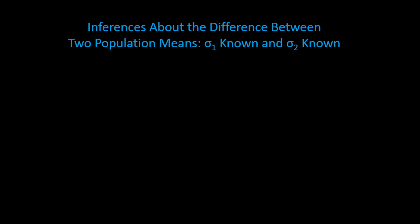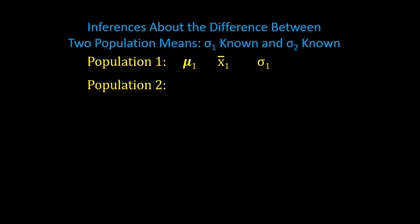Now let's assume we have two independent populations — population 1 and population 2. These can be two different manufacturers of light bulbs, or two different groups of students, say day students and evening students, or undergraduate students and graduate students. Population 1 has its own population mean mu subscript 1, sample mean x bar subscript 1, population standard deviation sigma subscript 1, and sample size n subscript 1. Population 2 similarly has mu subscript 2, x bar subscript 2, sigma subscript 2, and n subscript 2.